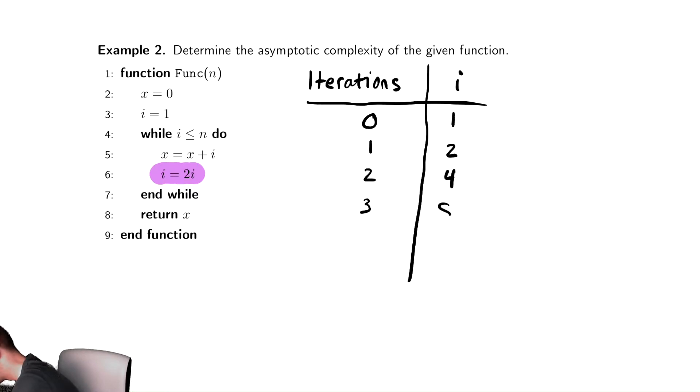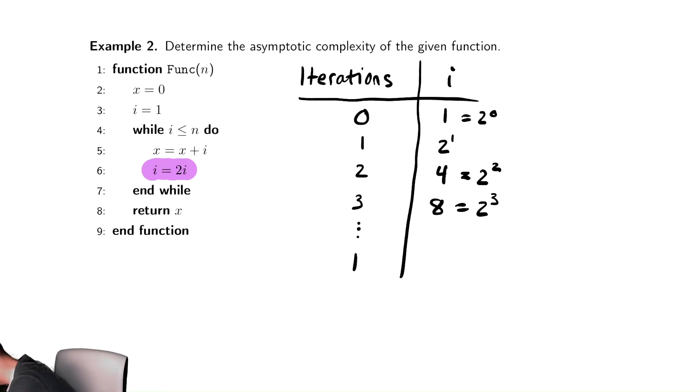After 3 iterations, it's 8. And maybe you can write these in some better ways to try and identify a pattern. Instead of 4, maybe I'll write that as 2 squared. And maybe instead of 8, I'll write that as 2 cubed. And now this is looking a lot like 2 to the number of iterations. So after k iterations, the value of i appears to be 2 to the k.